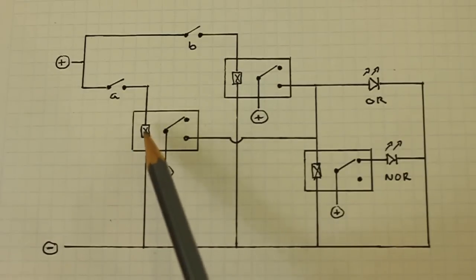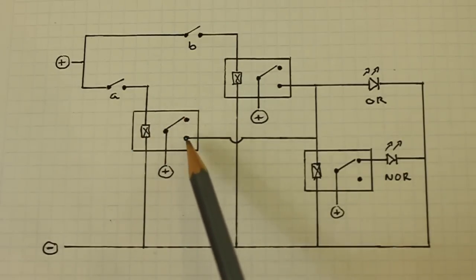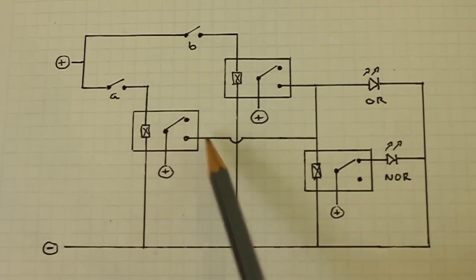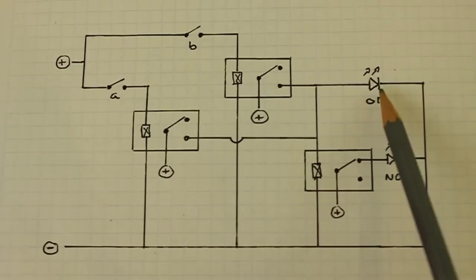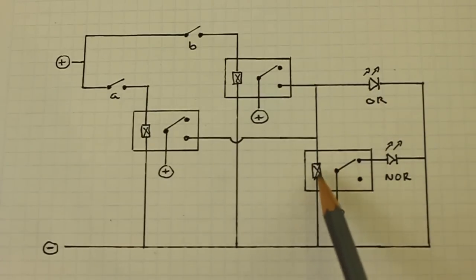This relay is energized. The switch moves to this position and the current flows to the OR LED and also energizes this relay.